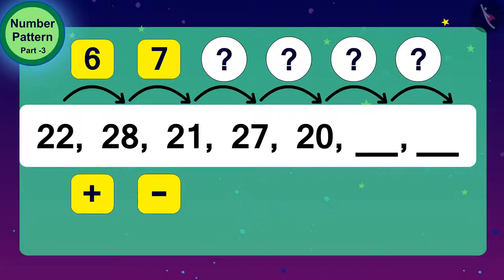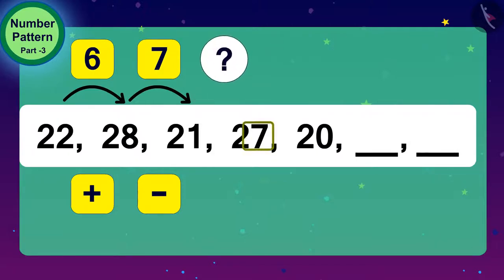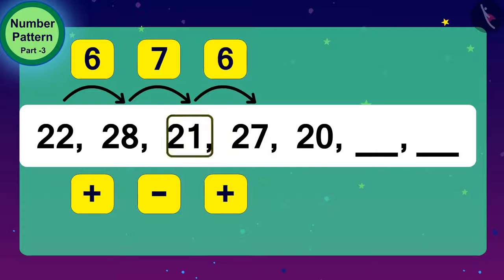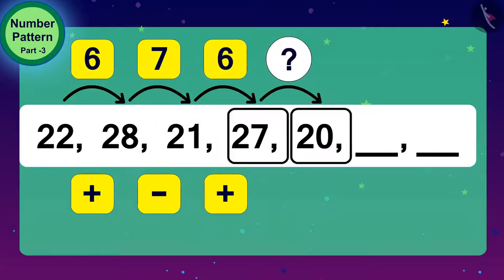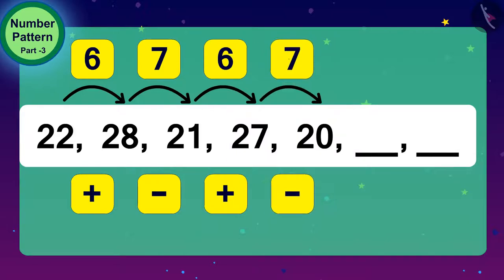No problem! Children, let us look at the next number. What will we do to get 27 from 21? We will add 6 digits to 21. And, how do we get 20 from 27? 7 is subtracted from 27. Children, do you now understand the unique rule of this number pattern?